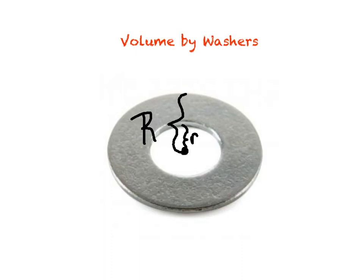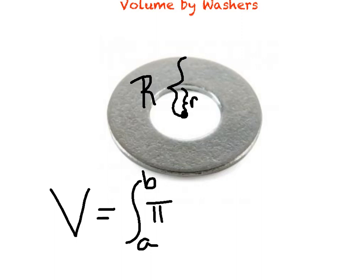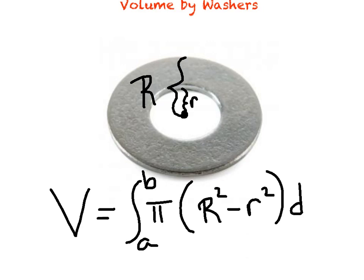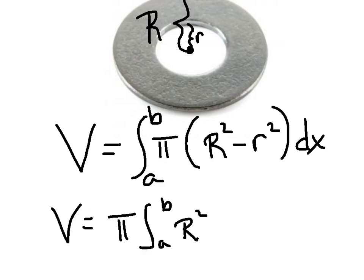Because I have two radii, the way I'm going to represent my volume when I have a washer is: volume equals the integral from A to B of pi times big R squared minus little r squared dx. So again, this is strictly for the washer: pi times big R squared minus little r squared.